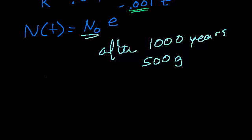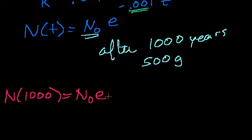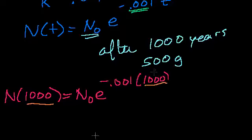I'm saying that after 1,000 years, so n of 1,000, which is equal to n sub 0 times e to the minus 0.001 times 1,000. That's the n of 1,000, that's the 1,000. And I'm saying that that's equal to 500 grams. That equals 500 grams.